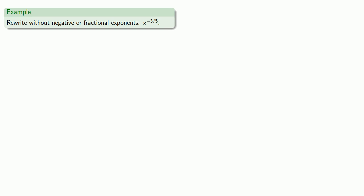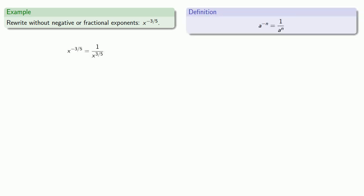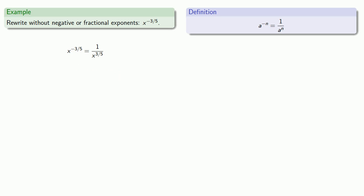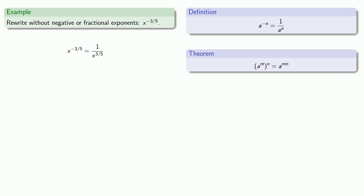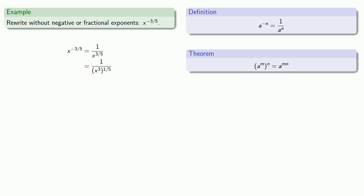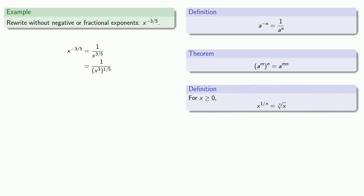Or let's try to rewrite x to power negative three-fifths without negative or fractional exponents. The negative exponent means one over the same base and power: one over x to power three-fifths. To deal with the fraction three-fifths, we use the product of exponents rule to split it as three times one-fifth. The reason we want that one-fifth is that we have a definition for x to power one over n — it's the nth root of x. So x to the third to the power one-fifth is the fifth root of x to the third. That gives us our final expression without negative or fractional exponents.